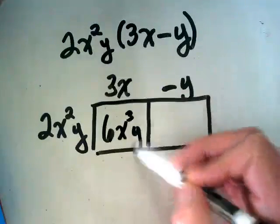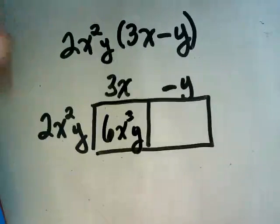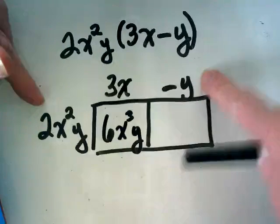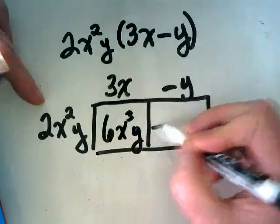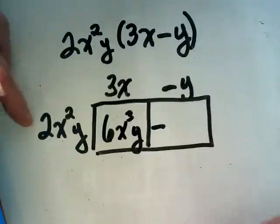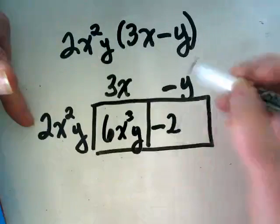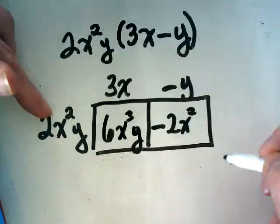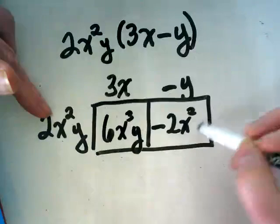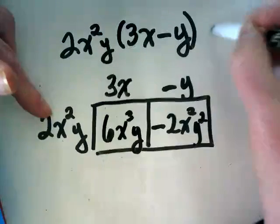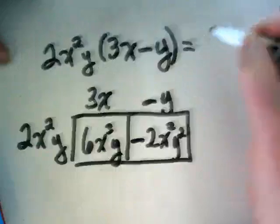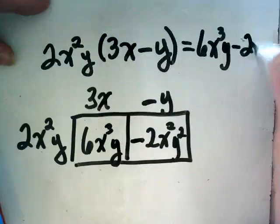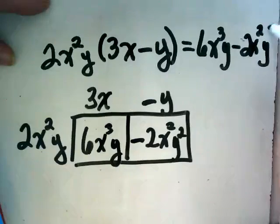And then five. And then one. But one. No. This term is now being multiplied by this one, and this term is negative. So I'm going to start off with my negative sign. The two stays the same because there's an invisible one here. x² stays the same, but what's going to happen to the y? Y squared. Y squared. That means the answer to this is 6x³y minus 2x²y².